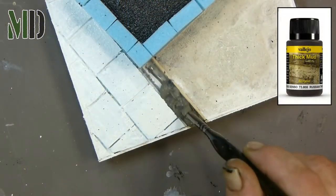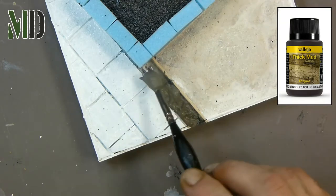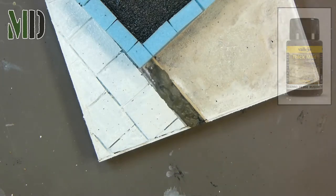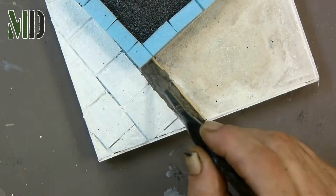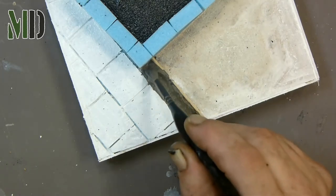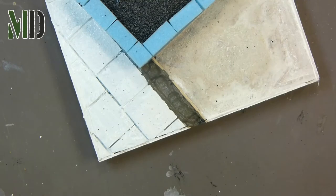Next I use some Vallejo Russian Mud, which is 73808, and I just use this to fill in the gap between the pavement slabs and the concrete slab. It's just a muddy earth texture, and I'll be putting some undergrowth and also a fence along here.